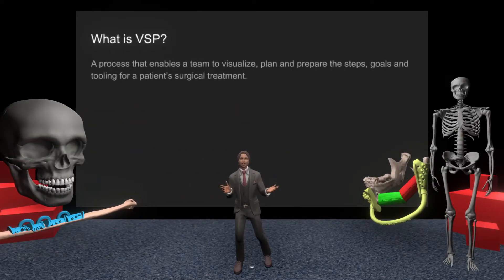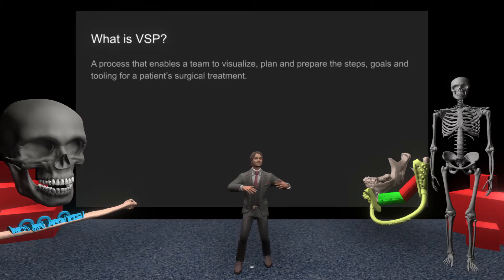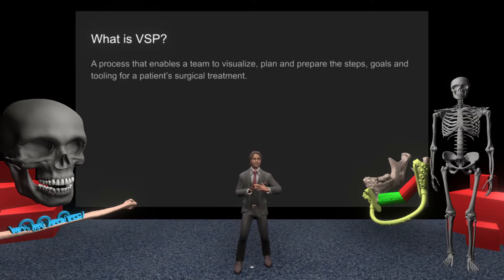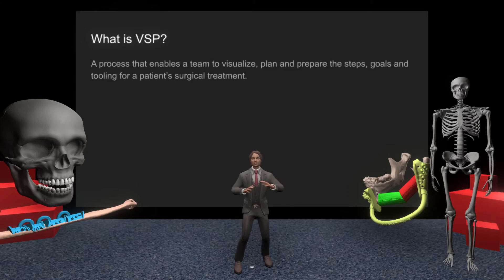So what is virtual surgical planning? We just call it VSP, and it's a process that enables a team to visualize, plan, and prepare the steps, goals, and tooling — such as surgical guides and hardware — for a patient's surgical treatment. It's vital to ensure a surgical team is equipped with what they need once they get into the operating room.